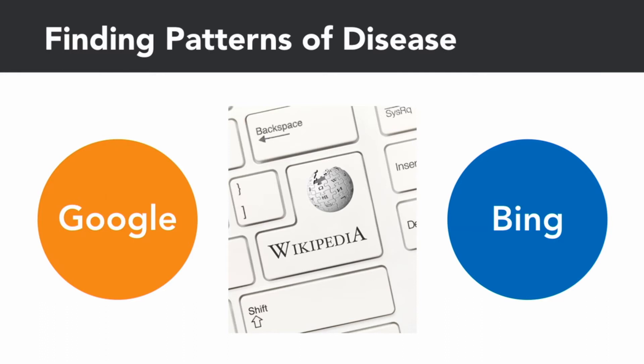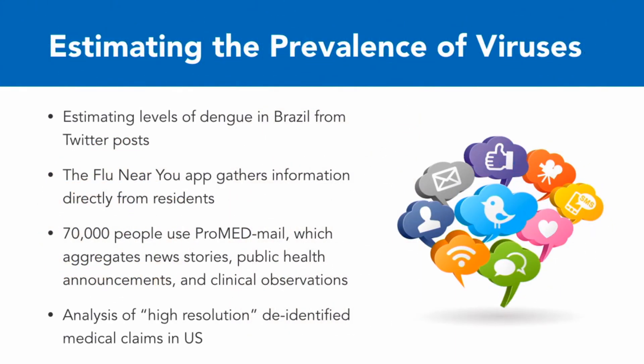But data science can do more than that with epidemiology. One of the big tests is estimating the prevalence of a disease. One research project estimated the levels of dengue in Brazil from Twitter posts, and they were able to do it both at a very local city level and at a country level, both in real-time and prospectively.